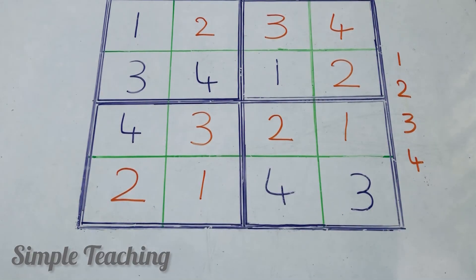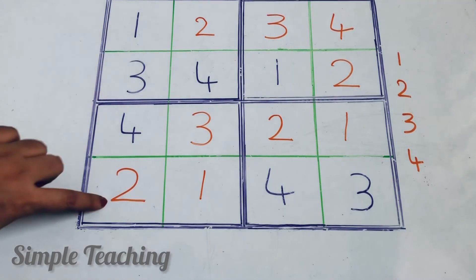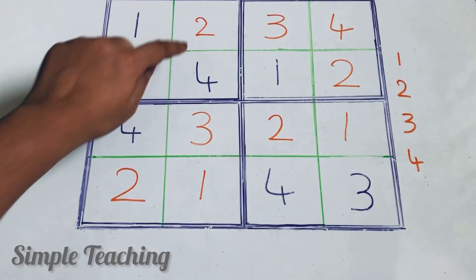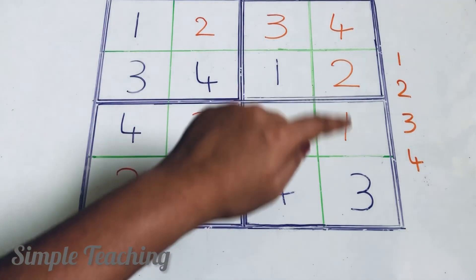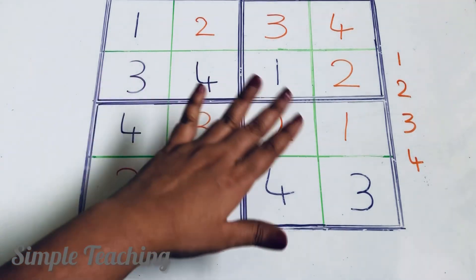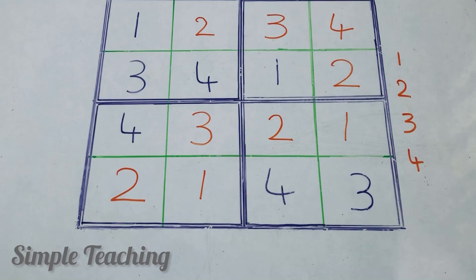Now check the rules: each row, column, or box must contain the numbers 1, 2, 3, 4 without repeating. Check this column — 1, 2, 3, 4. In the same way, check the second column, third column, fourth column, and verify all columns, rows, and boxes. This is the way to solve a simple 4x4 Sudoku puzzle.